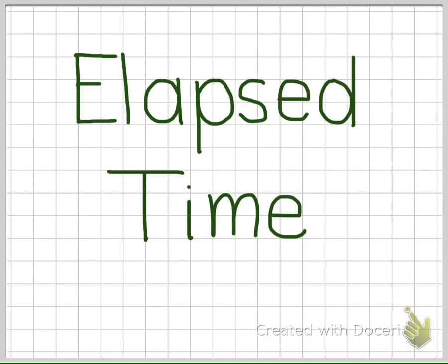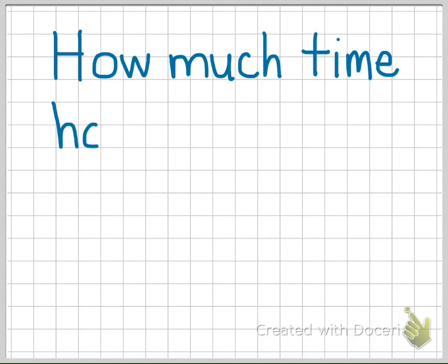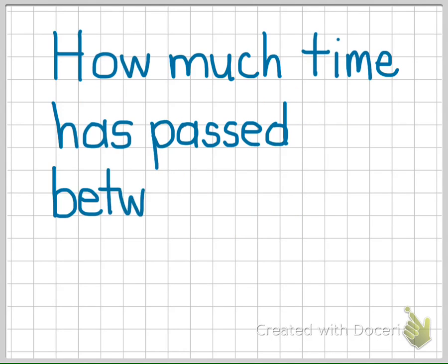Today, we're going to discuss two methods for calculating elapsed time. Elapsed time simply means how much time has passed between two events.